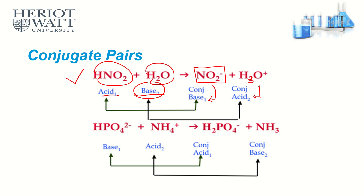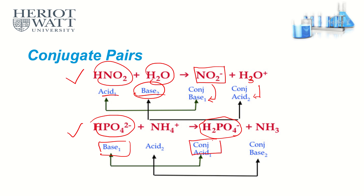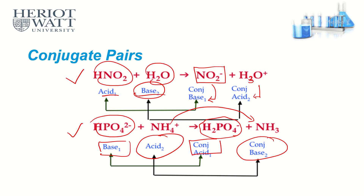In general: we name acids and bases on the left (reactants) and conjugate acid and conjugate base on the right (products). Acid turns into conjugate base; base turns into conjugate acid. These are the conjugate pairs. We move from left to right — reactants to products — for naming.